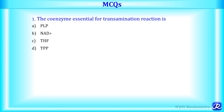MCQ 1: The coenzyme essential for the transamination reaction is — option A: pyridoxal phosphate; option B: NAD; option C: tetrahydrofolate; or option D: thiamine pyrophosphate. We know that pyridoxal phosphate is used as a coenzyme in the transamination reaction. So the answer is pyridoxal phosphate.